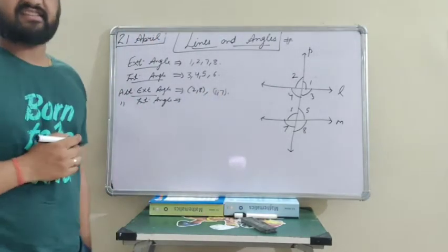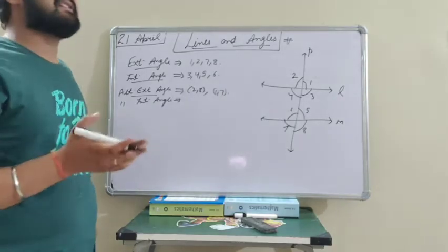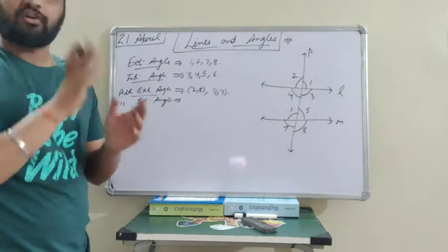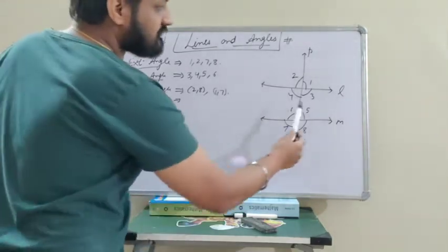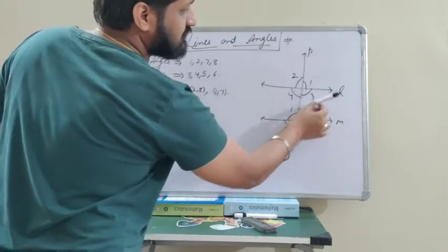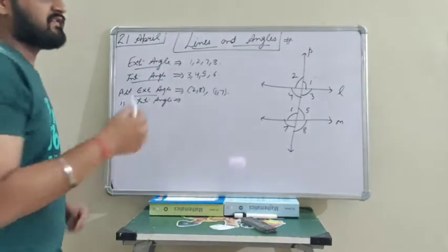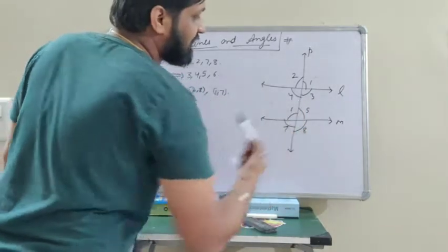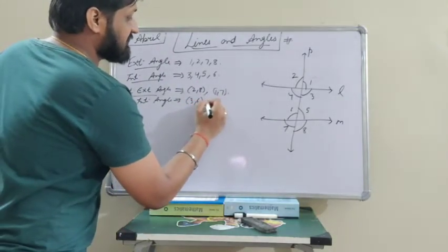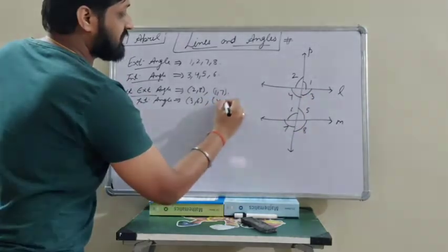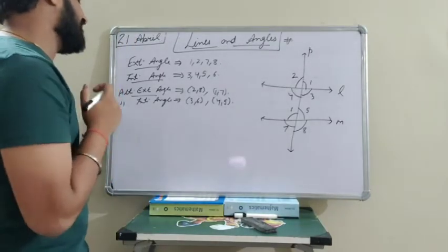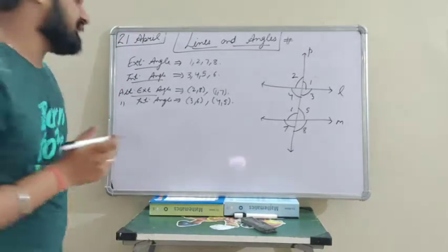Similarly, alternate interior angles — inside the interior of the line segments — and we also have to see the crossing. Here it is 4 and 5, and 3 and 6. We have to see the angles from both sides which are alternate to each other. So angle 3 is alternate to angle 6 — that is alternate interior angles. So 3 and 6, and the next pair is 4 and 5. This is the concept of exterior, interior, alternate interior, and alternate exterior angles.